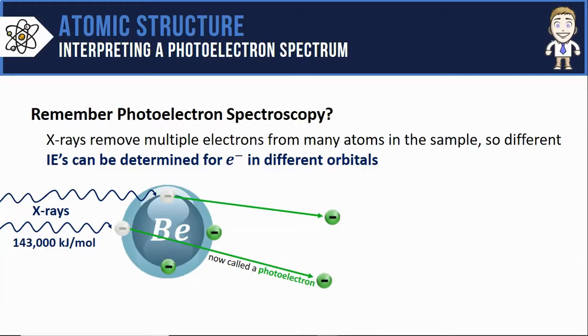First, remember from the last video that in photoelectron spectroscopy we use x-rays to remove multiple electrons from many different atoms in a sample so that the different ionization energies of those electrons in different orbitals can be measured.